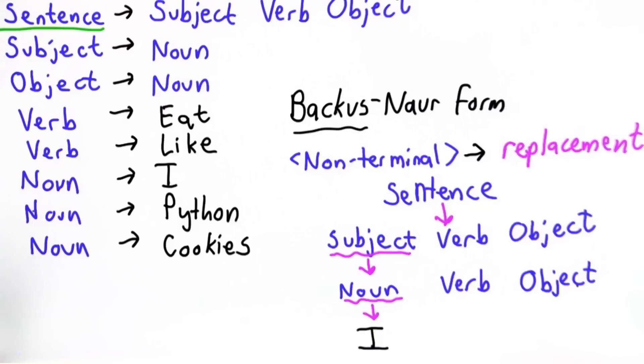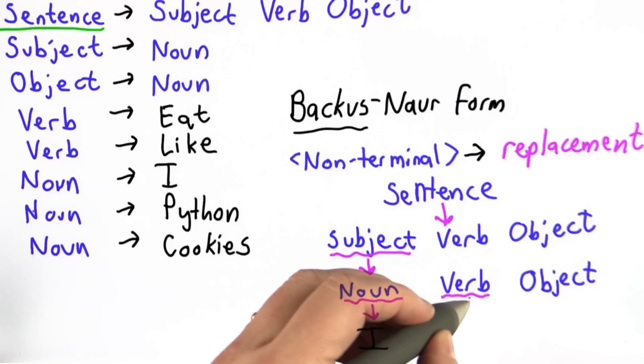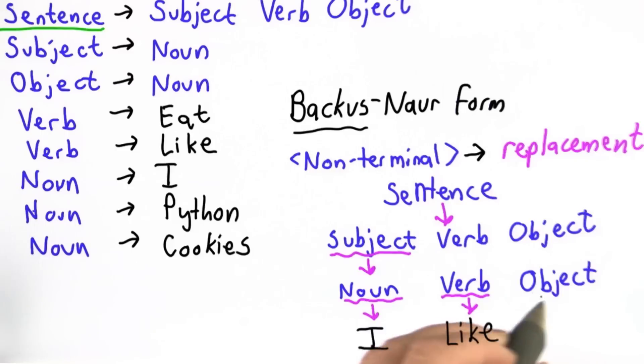Verb and object stay the same. I'm running out of space, so I'm not going to write them again, because now we can use rules to replace verb. As a separate step, we're going to find a rule that matches verb. We have two choices. I'll pick the second one and replace verb with like. We still have object.